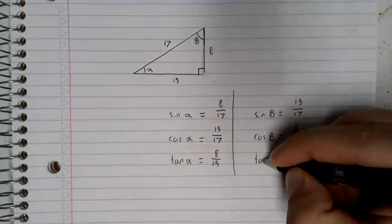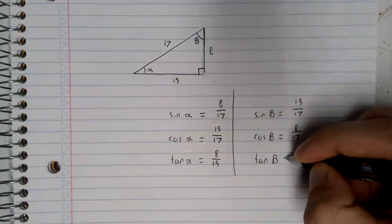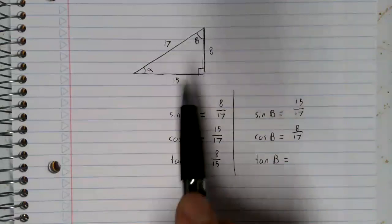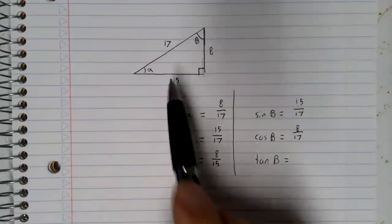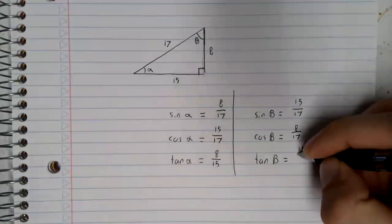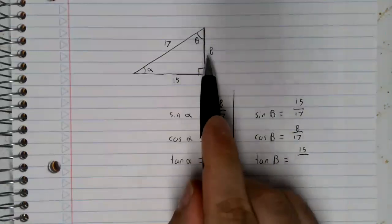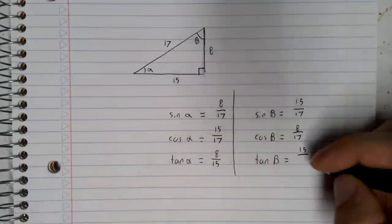And the tangent of beta, the opposite side over the adjacent side.